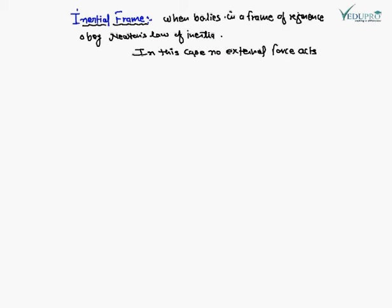We start to explain the inertial frame. A frame of reference is said to be inertial when a body in the frame of reference obeys Newton's law of inertia and other laws of Newton mechanics. According to Newton's law, a body not acted upon by any external force has acceleration equal to zero: A = d²R/dt² = 0.